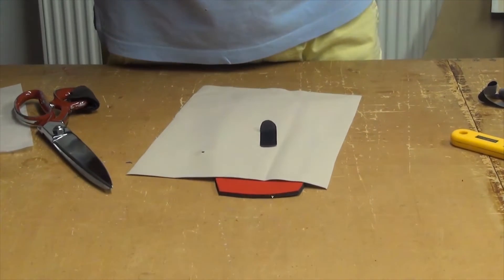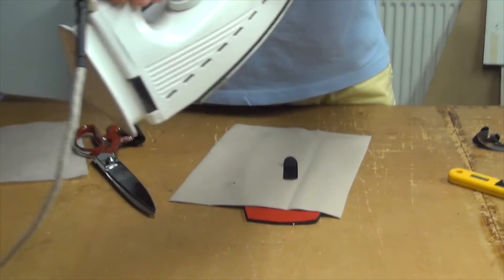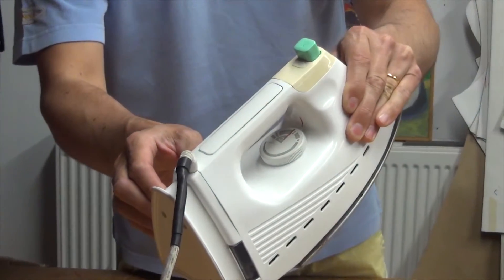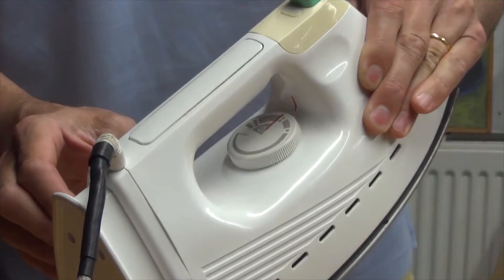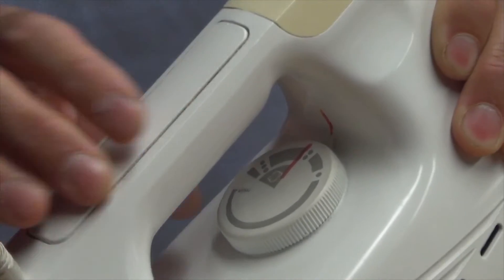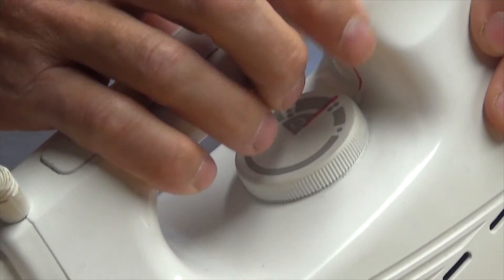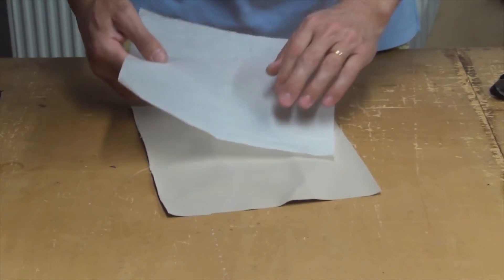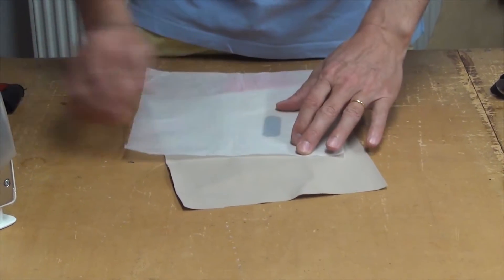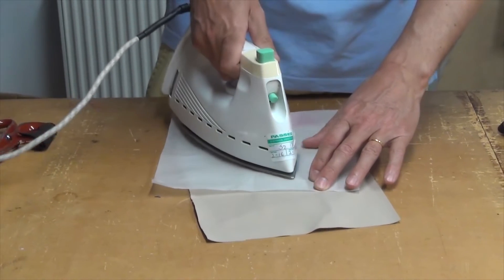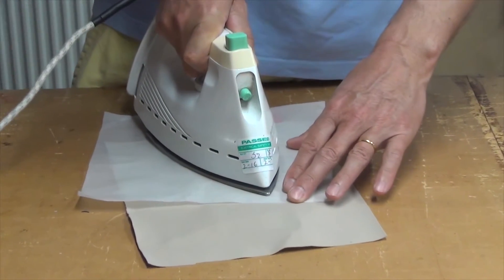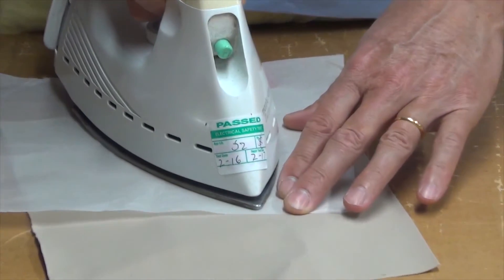We use a domestic iron and the heat is set just about at the steam setting so it's not too hot, not too cold. It will still burn your skin if you touch it. So repair tape on top of the textile, greaseproof paper on top of that and then for about 15 seconds we're going to just gently apply a bit of pressure with a domestic iron.